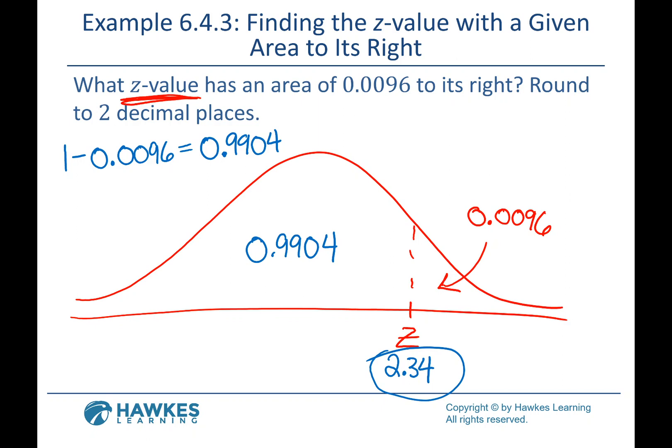There is another way to do it using symmetry. We're given the area to the right, 0.0096. If you go to the tables and look for an area of 0.0096 inside, that'll be over on the negative side and give you negative 2.34. You can remember that 'right means opposite' — so we flip the sign and get positive 2.34. Either method is fine.